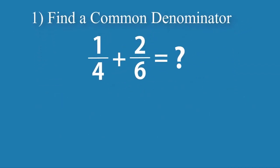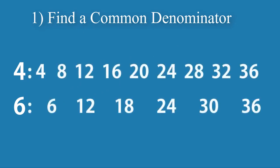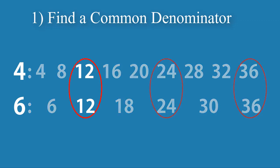Step number 1: Finding a common denominator. A common denominator is found by listing the multiples of the original denominators. For the fractions of 1 fourth and 2 sixths, we list the multiples of 4 and 6 because they are the denominators. All of the circled numbers are common denominators. Always choose the smallest number.